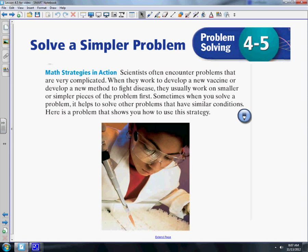This one is called solve a simpler problem. Math strategies in action: Scientists often encounter problems that are very complicated. When they work to develop a new vaccine or method to fight disease, they usually work on smaller or simpler pieces of the problem first. Sometimes when you solve a problem, it helps to solve other problems that have similar conditions. Here's a problem that shows you how to use this strategy.